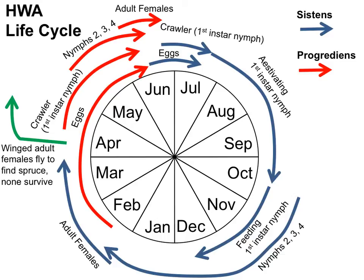Some of the progrediens eggs do actually develop into a winged adult. These adult females that have wings fly off to find a spruce host. In their native Japan, the suitable spruce host is called tiger tail spruce. On this spruce host — which is actually their primary host, with hemlock being their secondary host — the hemlock woolly adelgid goes through three more quick generations, one of which is sexually reproducing, with separate sexes, males and females. However, here in the northeastern United States, when these winged adults go off to find spruce, there are no suitable spruces, so none of them survive and they never go through sexual reproduction. Only these two asexual generations occur here in the United States.